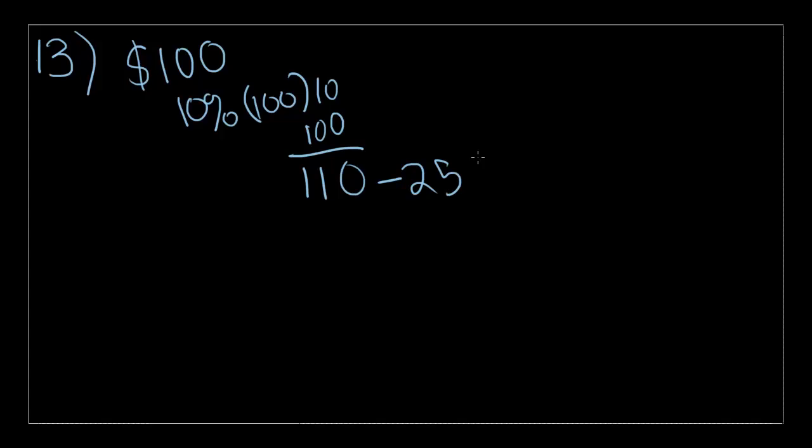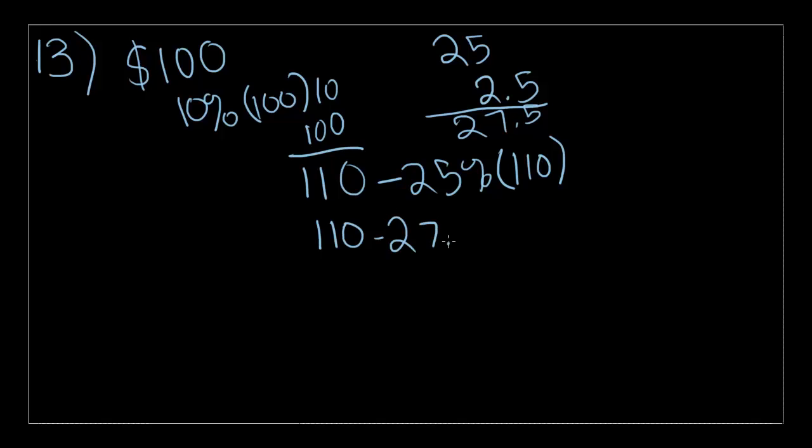So 110 minus 25% of 110. Now since I don't have a calculator, I'm just going to do it in my head and show you how. 25% of 100 is 25. 25% of 10 is 2.5. So 27.5 is 25% of 110. So that's a little trick to remember. So 110 minus 27.5 is equal to 82.5.